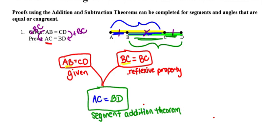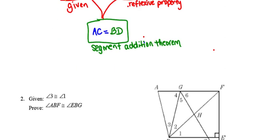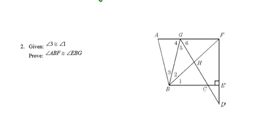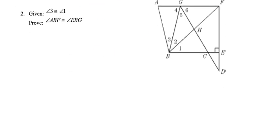You've just written your very first proof using the segment addition theorem. Let's take a look at another one. In the next example, we're given that angle 3 is congruent to angle 1, so I'm going to mark that in my picture. Where I want to be at the end is angle ABF — that yellow angle in the picture.